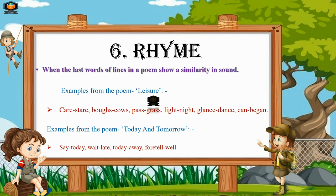Another example from 'Today and Tomorrow': say, today, wait, late, today, away, foretell, well — these are also rhyming words at the end of the lines. When a poem has rhyming words at the end of its lines, it uses the literary device of rhyme.